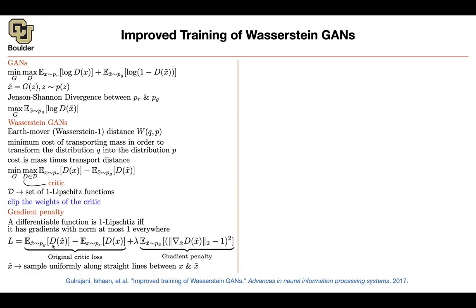You might wonder what X-hat is. X-tilde is coming from the generator; X is coming from the real data distribution. X-hat is just a linear interpolation between the two — a random point between these two points. So you're enforcing the gradient penalty on that interpolated region. You have the real data, you have the generated data, and you have a bunch of data in between where you are enforcing this objective.